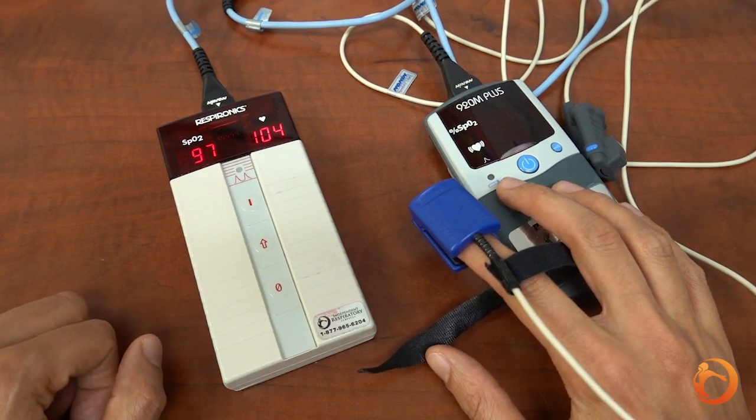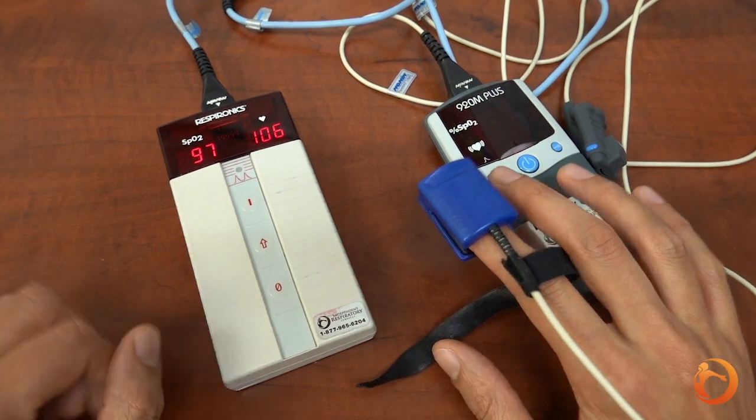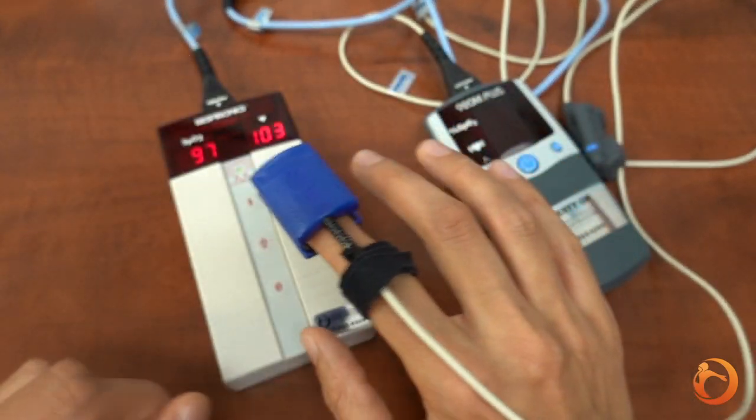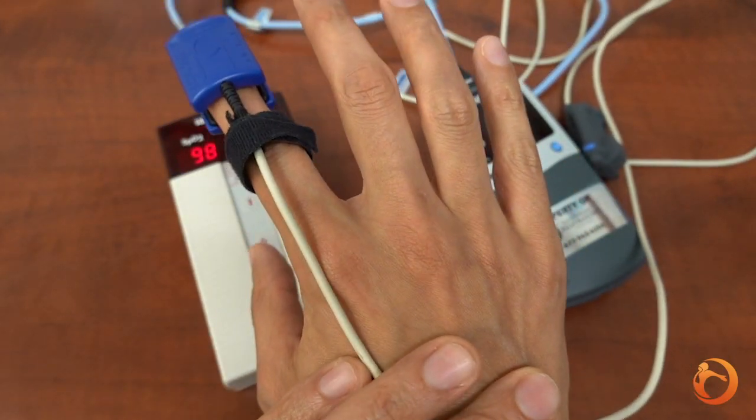Once you got a good signal, secure the probe on your finger with the velcro, making sure it allows for adequate blood flow. Secure the cable to the back of your hand with a piece of tape or band aid.